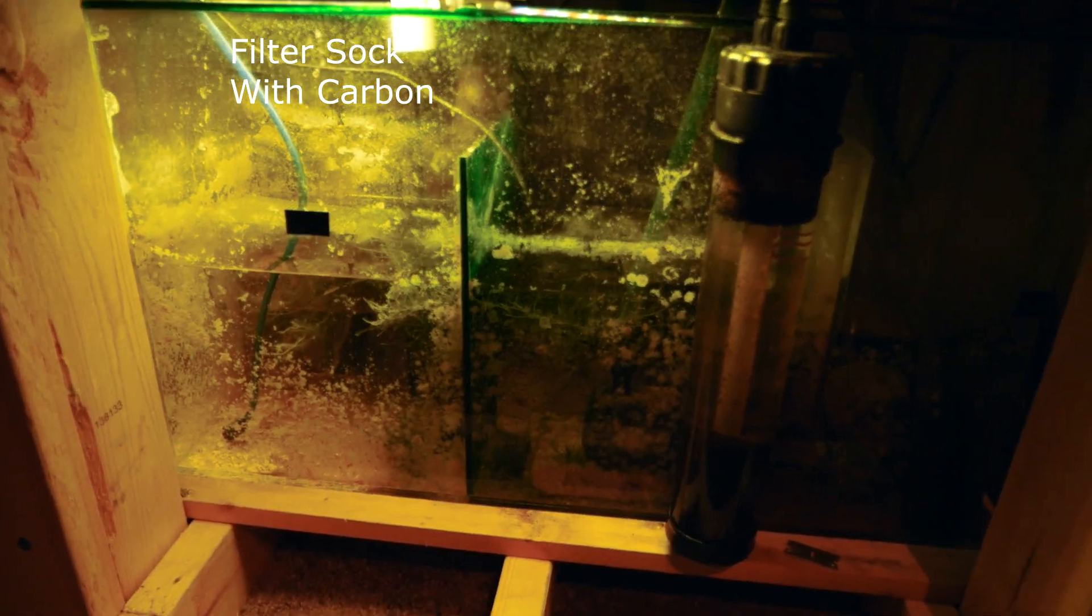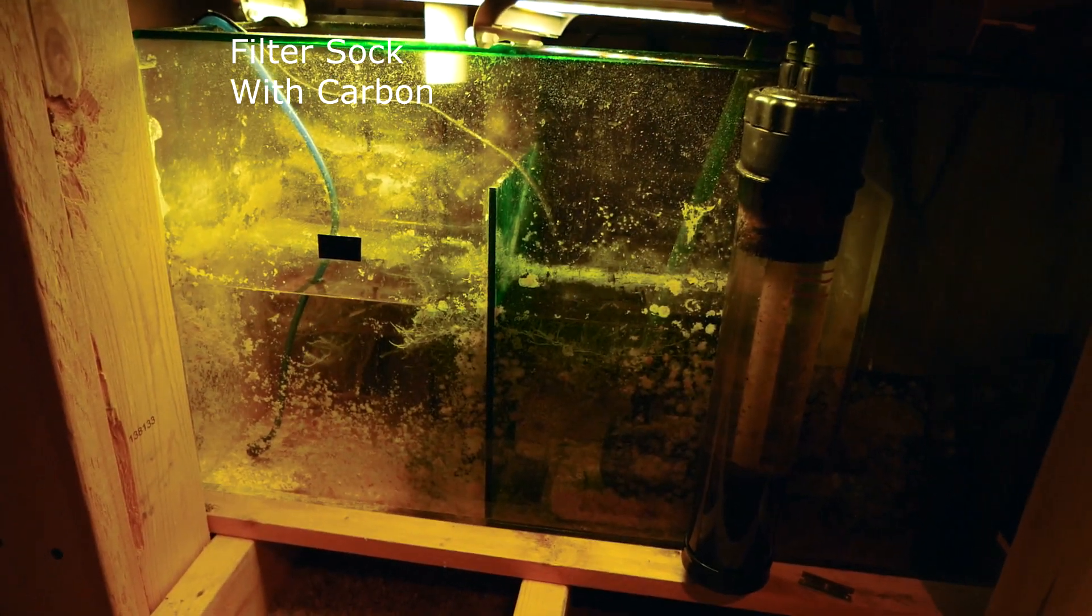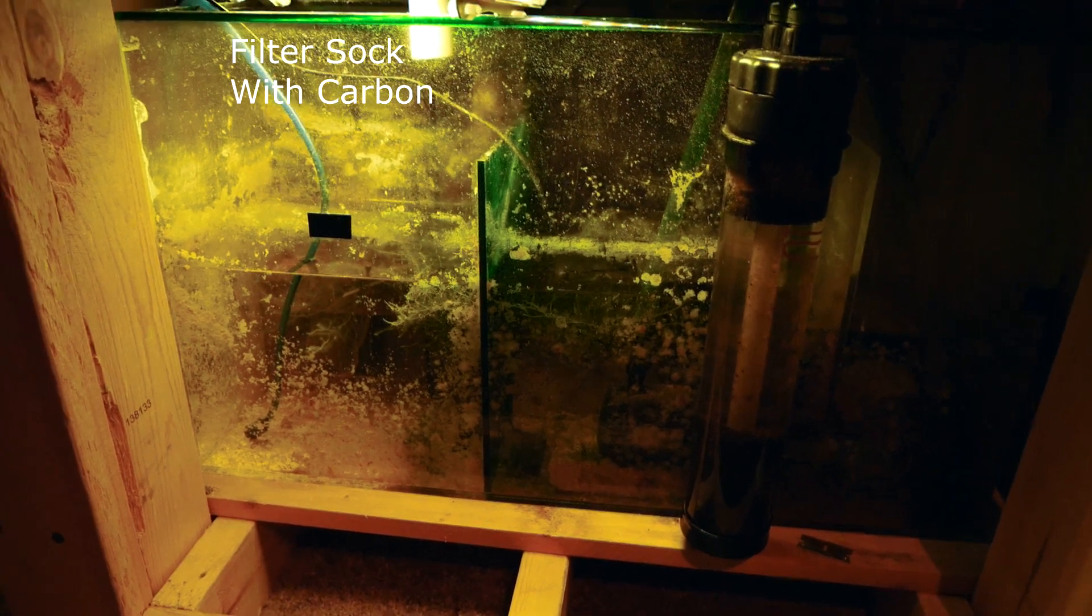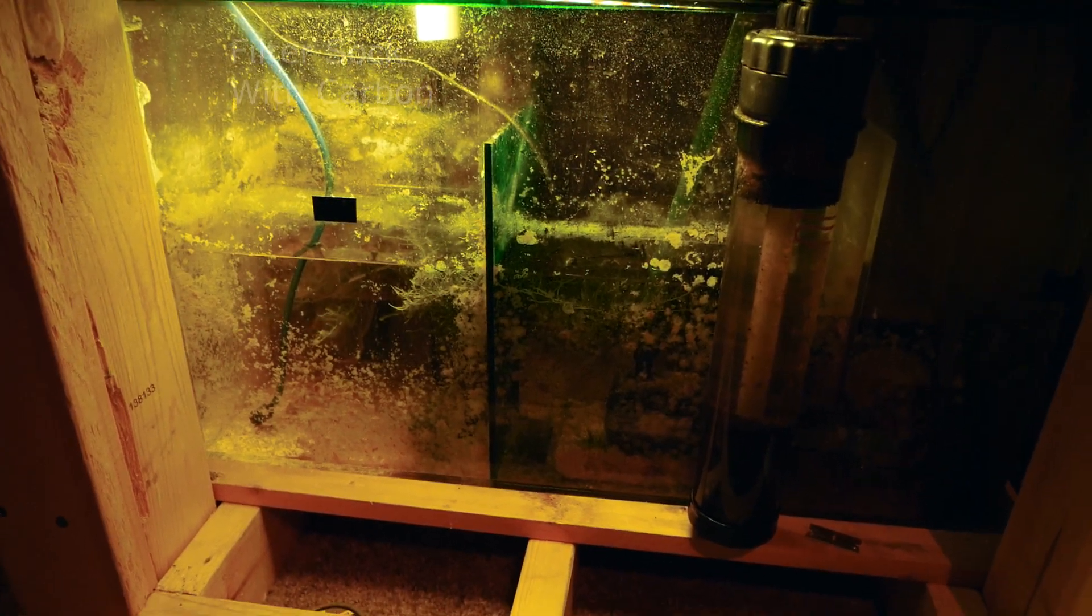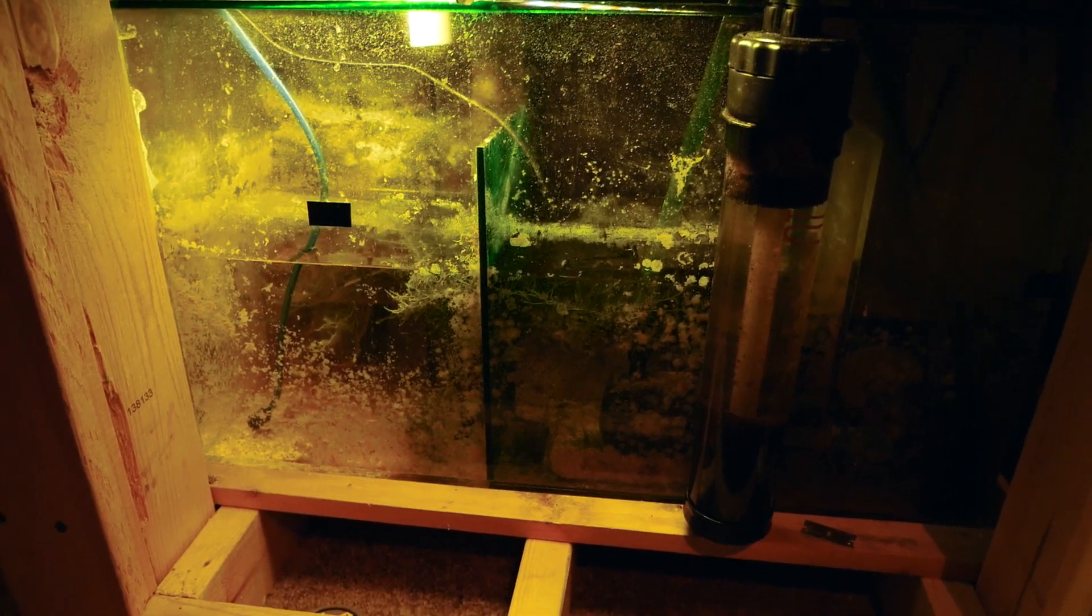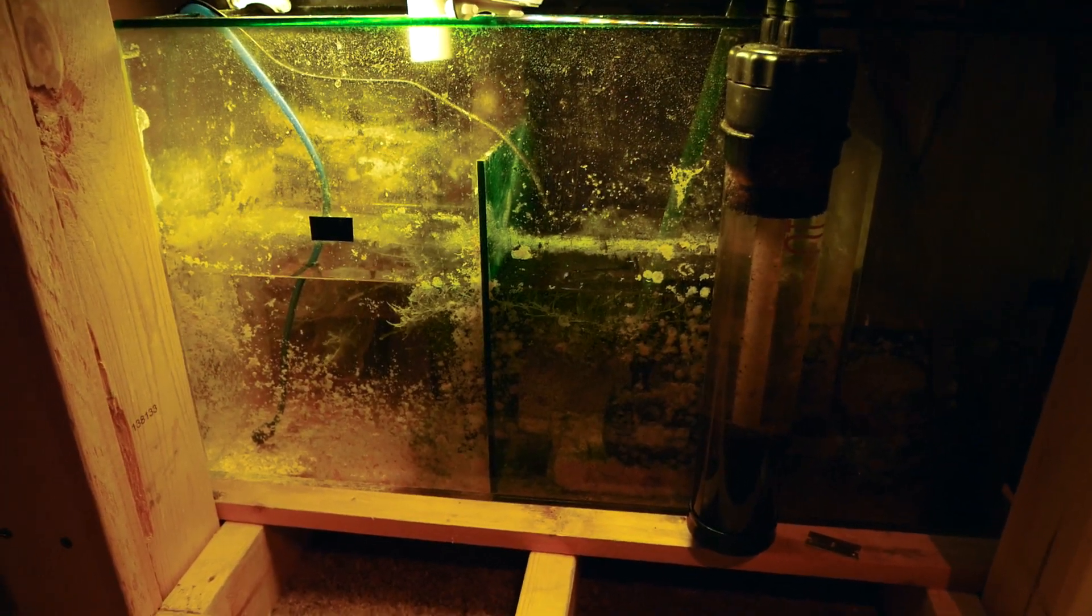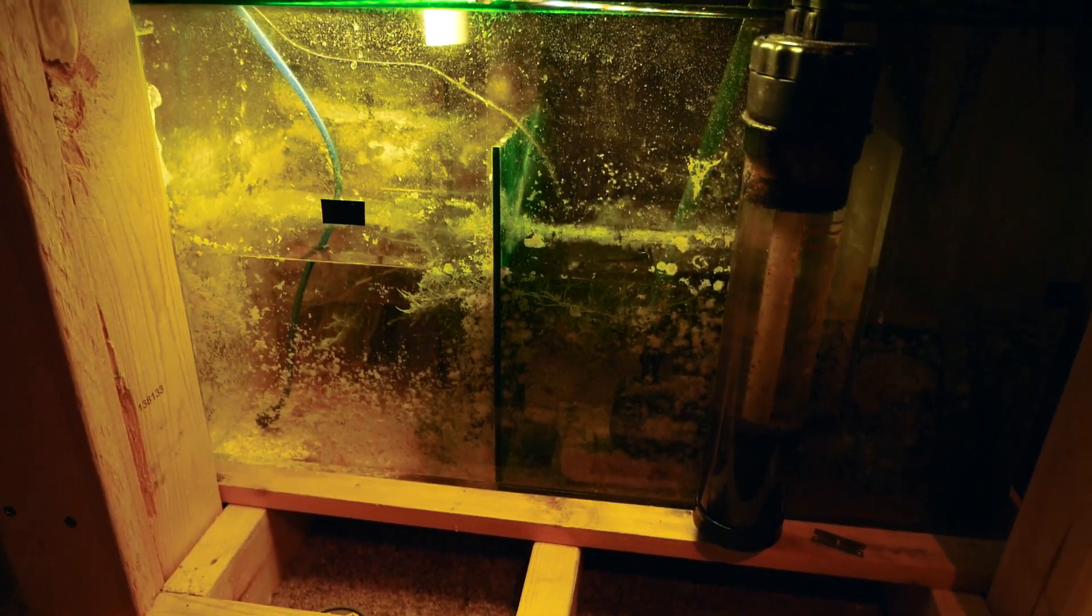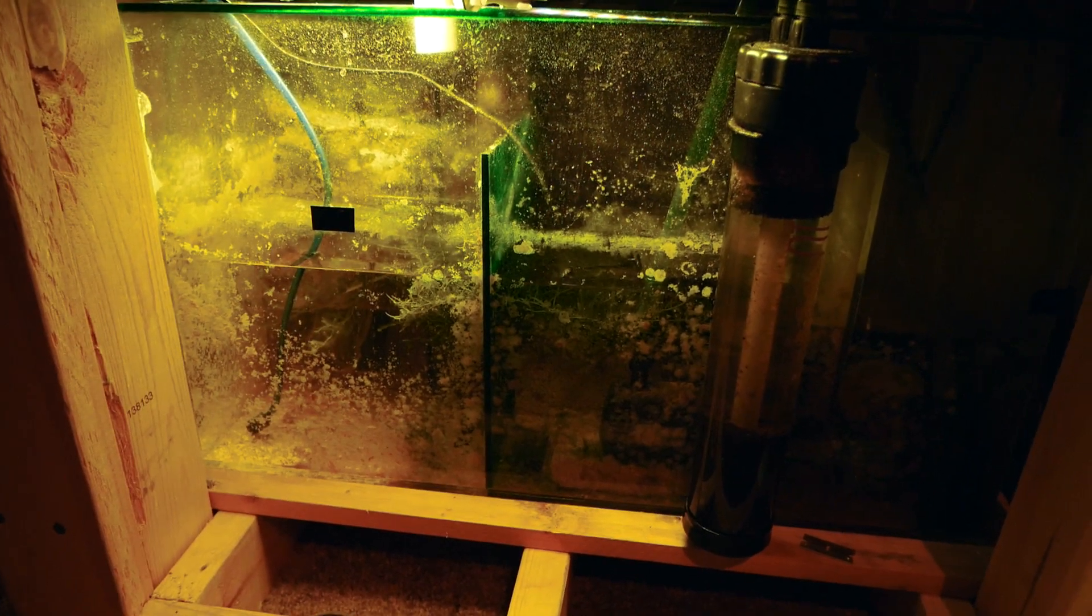So the whole reason I have carbon is because I do have some softies in the tank. And softies do practice chemical warfare. So I would rather use the carbon to remove whatever chemicals they're releasing into the water instead of allowing those chemicals to inhibit the coral growth.